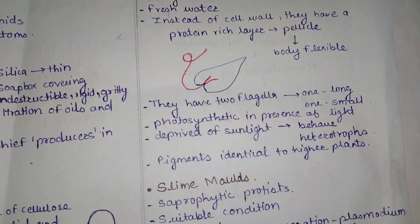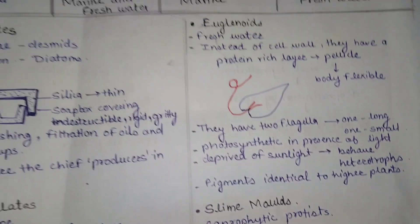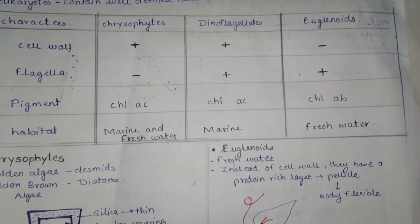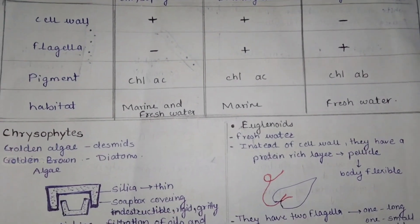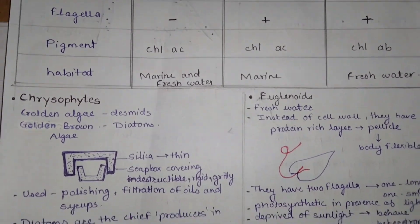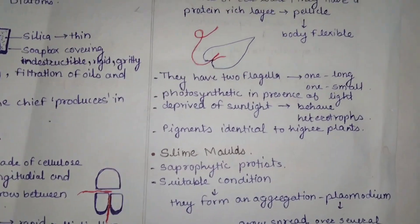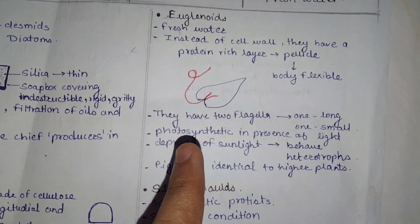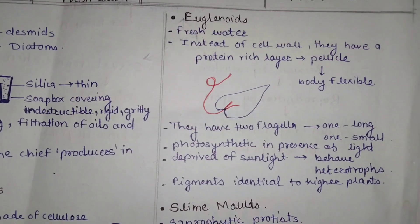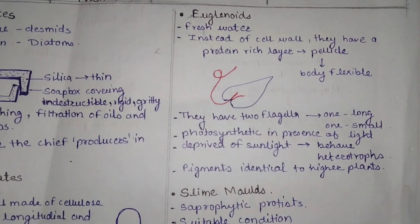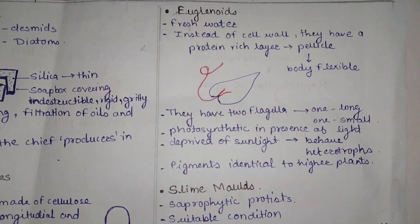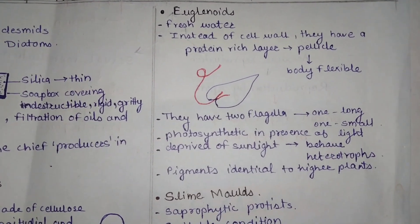Euglenoids are photosynthetic in the presence of light. The pigment chlorophyll A and B is present — the same as in higher green plants — so photosynthesis can be performed. In the presence of light, they photosynthesize.